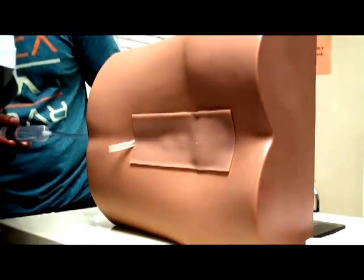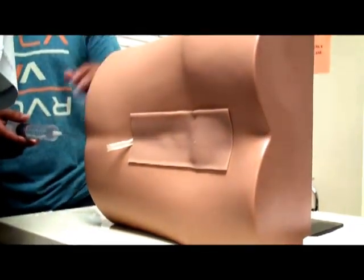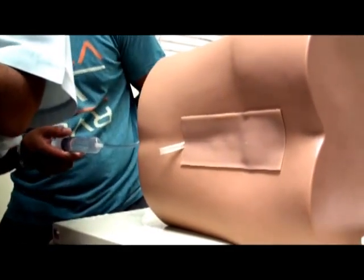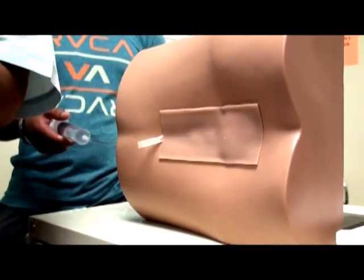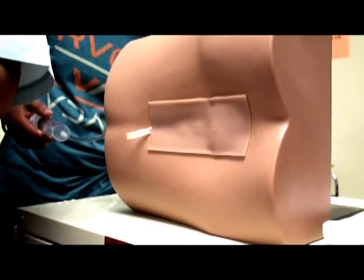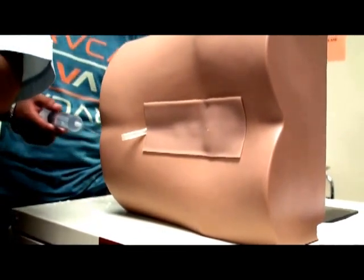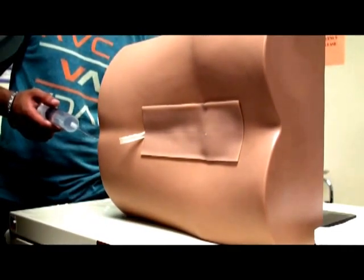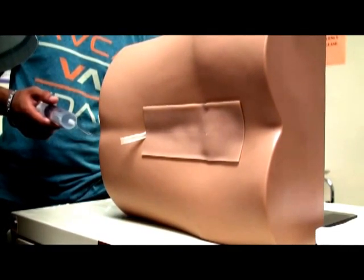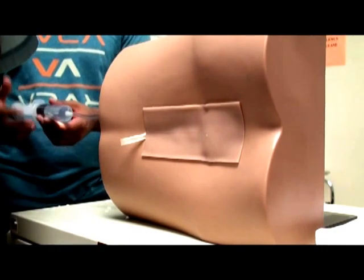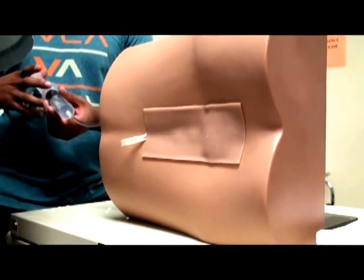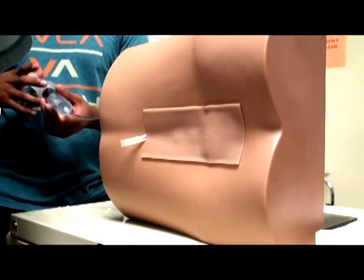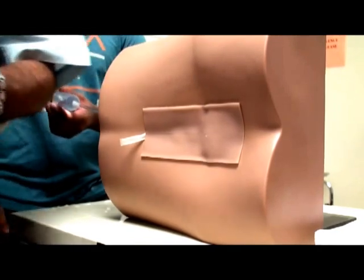But here we cannot ask him to cough because he is not aware of it. So what we can do is, the next procedure is you can rotate the needle in its long axis. That way also it dislodges the arachnoid trabeculae and the CSF will start dripping out. And the third procedure that we can do is, we can take a syringe and attach it because remember the stylet is already out. You can attach the syringe to the hub of the needle and you can gently aspirate. Then the CSF will start dripping out.